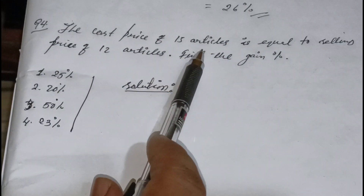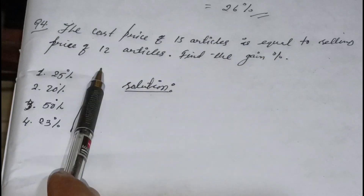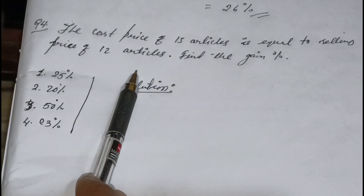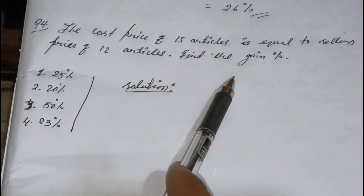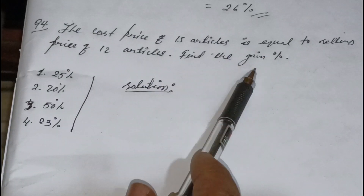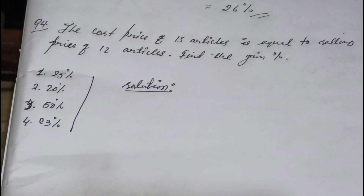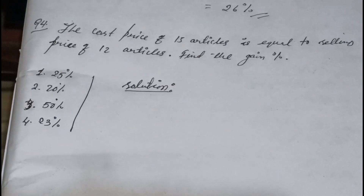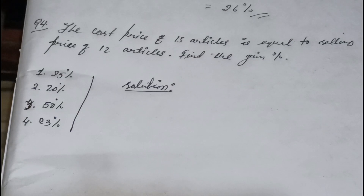Now let's look at a profit and loss question. 15 articles' cost price equals 12 articles' selling price. Find the gain percentage. Profit and loss — you can use the formula in less than 10 seconds without any complex formula. Let's practice it.